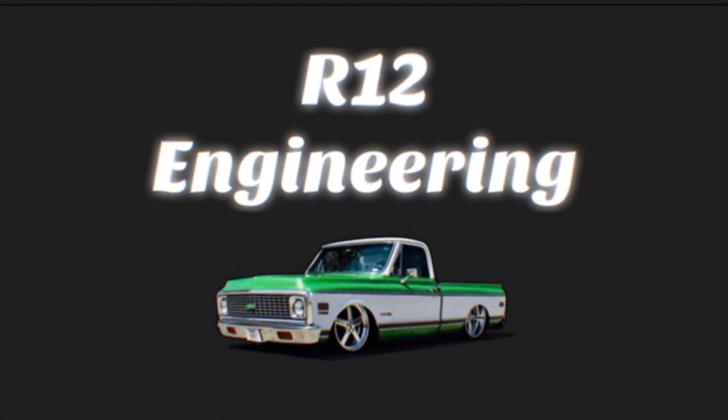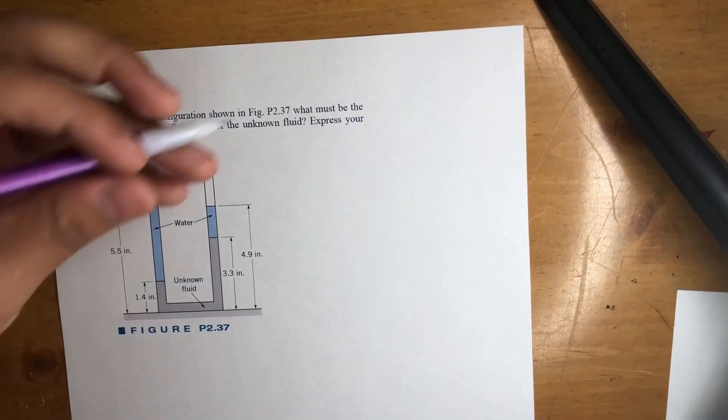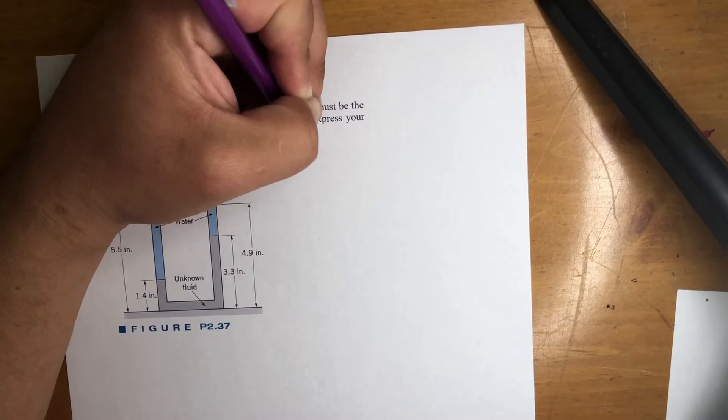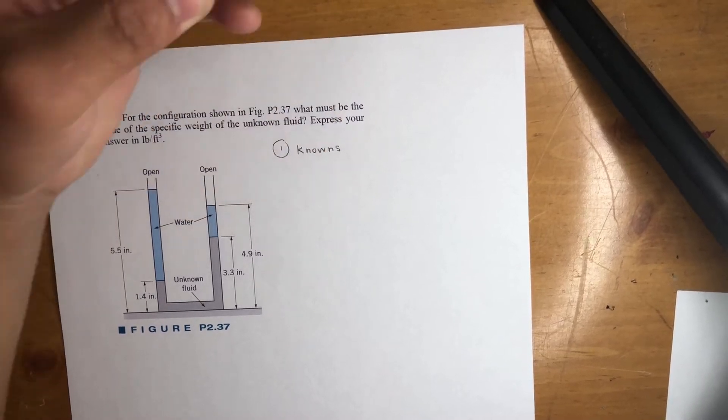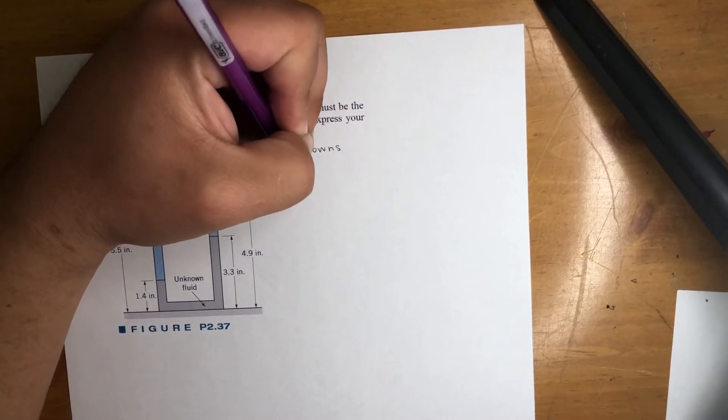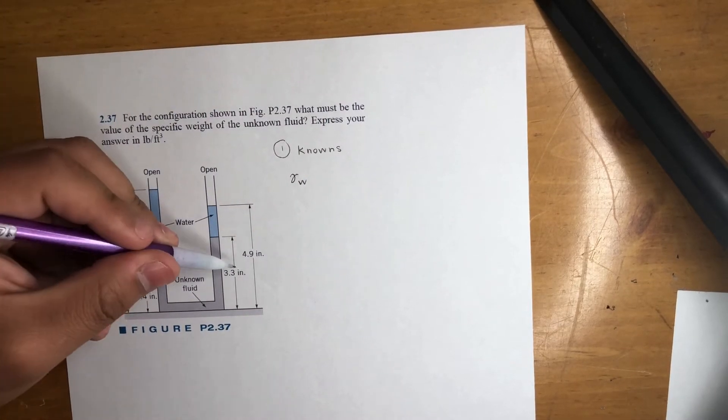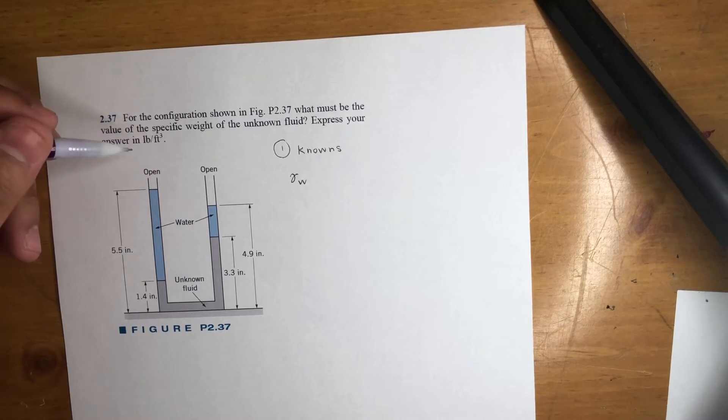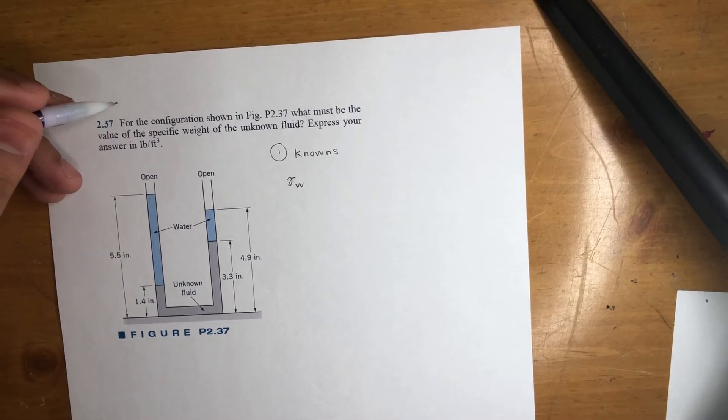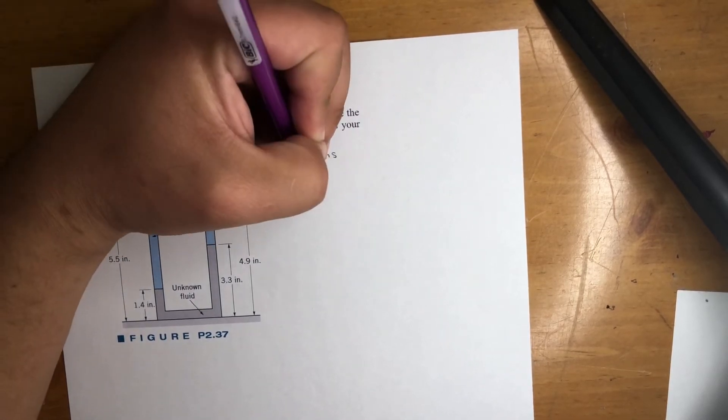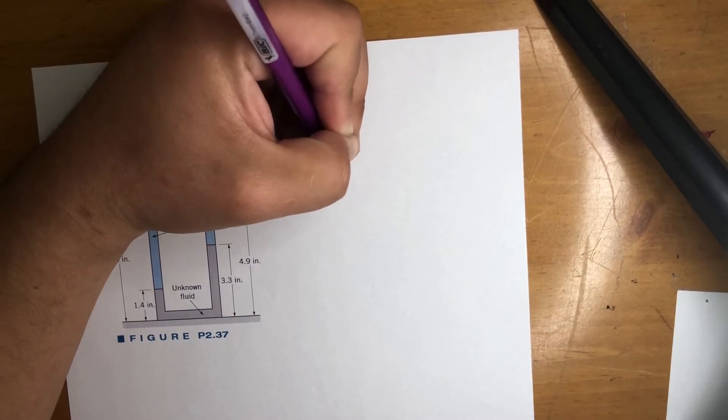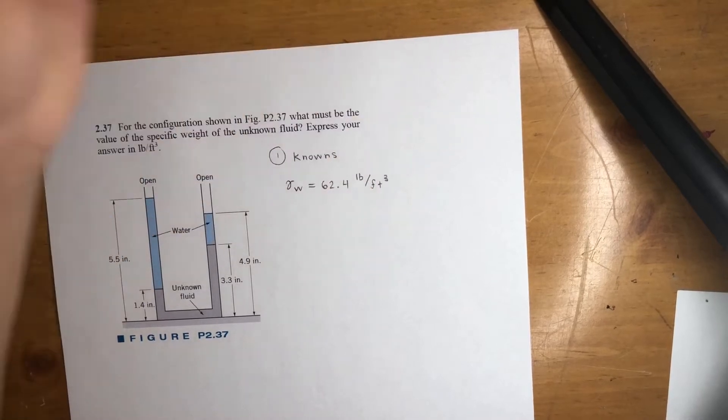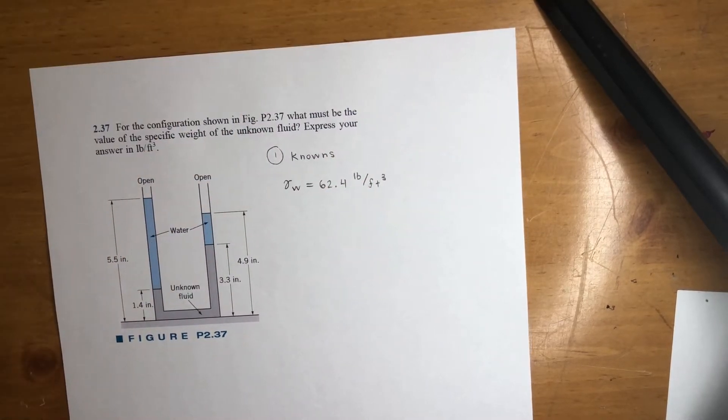First step, knowns. What do we know? We know we got water, so that off the bat tells you we're working in inches, pounds per feet cubed. We know the specific weight of water.